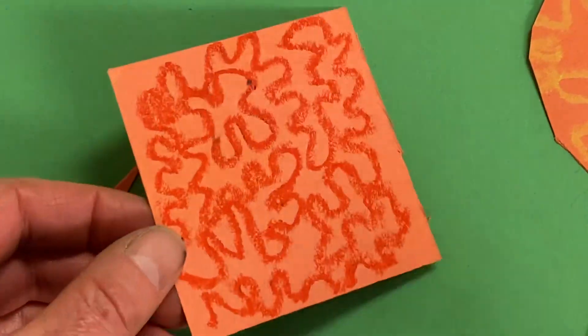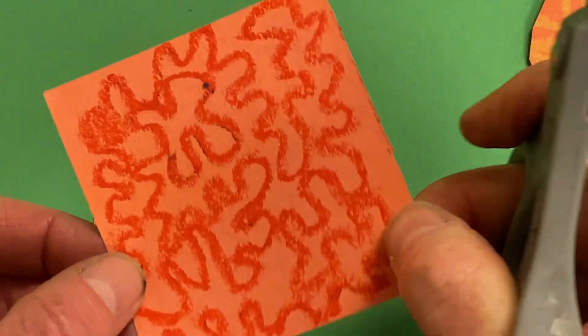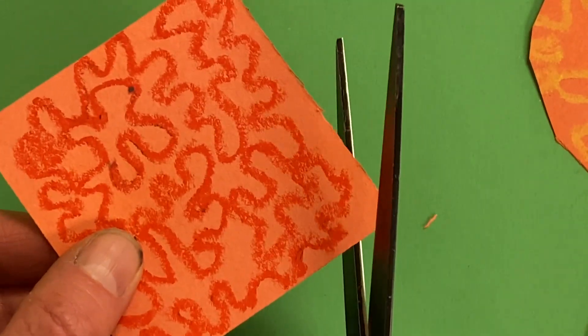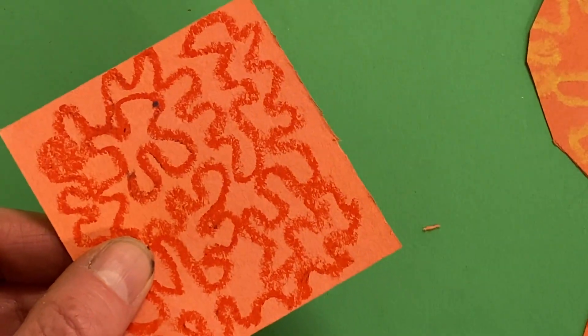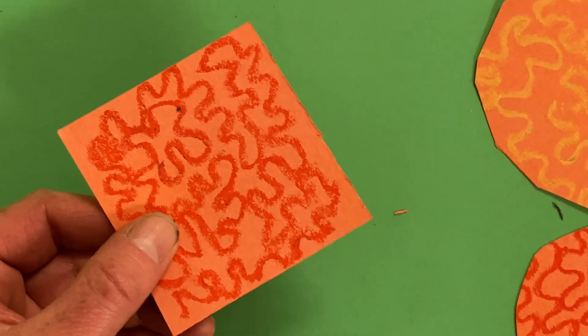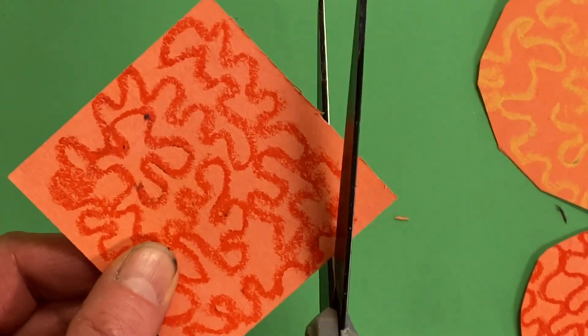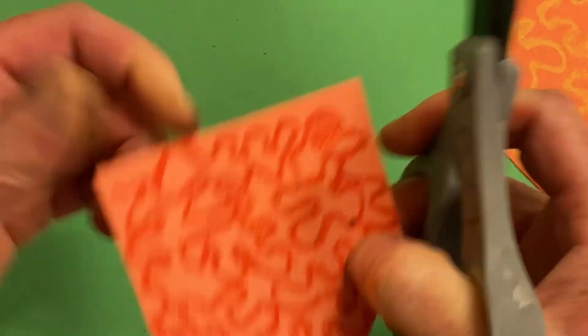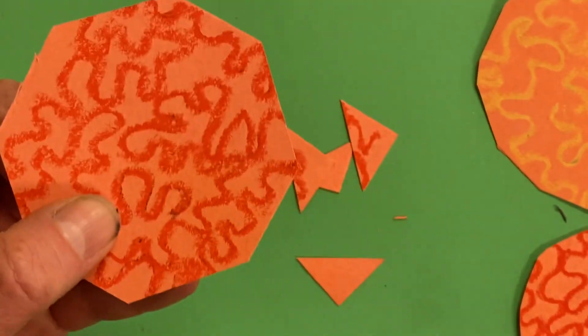Now the very last step is to turn it into a circle. So we're going to cut off medium-sized triangles - medium, medium, medium, and medium.